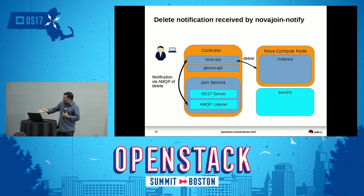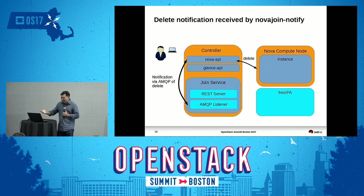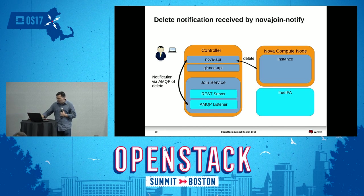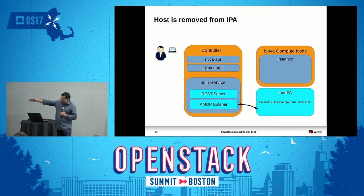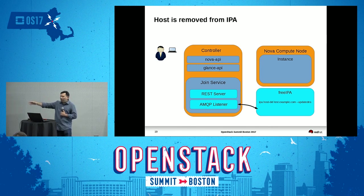When you delete an instance, Nova is going to delete the instance and send out a notification that an instance has been deleted. That will be read by the NovaJoin Notify service on the message queue. Then we'll go ahead and delete that from FreeIPA — while deleting, it will remove any DNS entries that have been added, clean up any services, and revoke any certificates that have been issued.